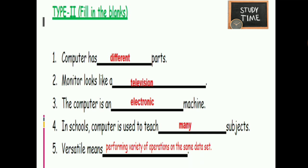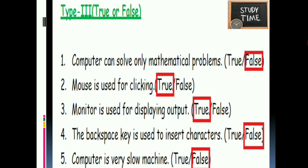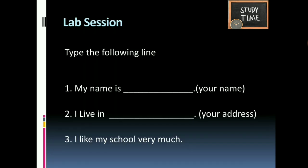Fill in the blanks: a computer has different parts. A monitor looks like a television. A computer is an electronic machine. In schools, computers are used to teach many subjects. Versatile means performing a variety of operations on the same data set. True or False: a computer can solve only mathematical problems — False. A mouse is used for clicking — True. A monitor is used for displaying output — True. The Backspace key is used to insert characters — False, it is used to delete. A computer is a very slow machine — False.